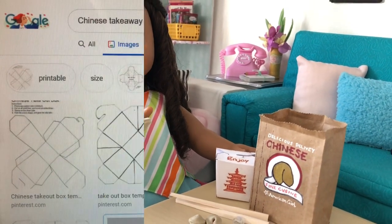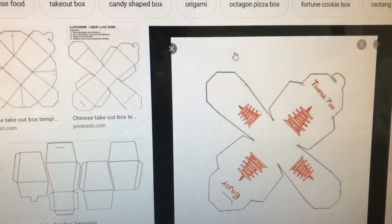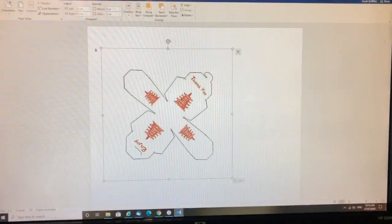Start by searching the net for Chinese takeout box templates. Select one that you like then simply right click and copy the image into a Word document.